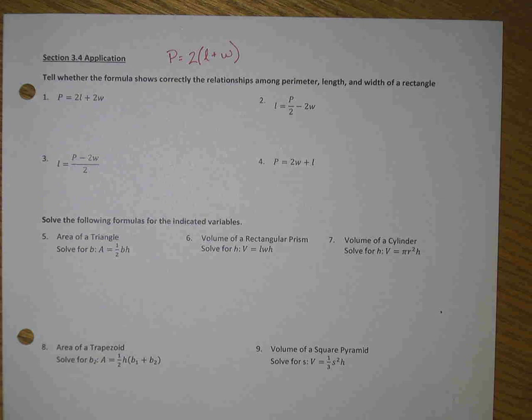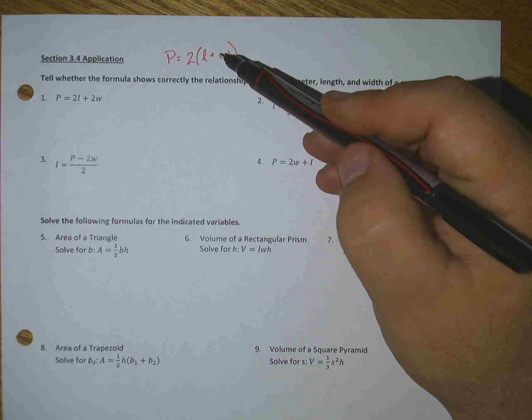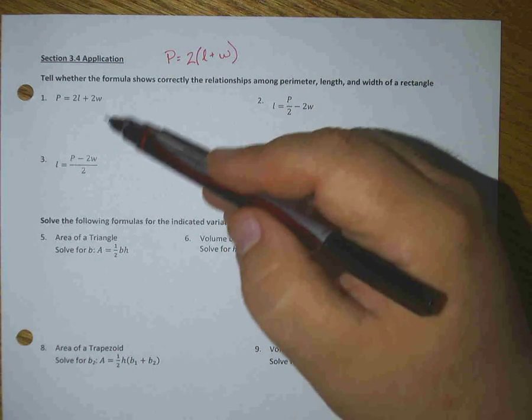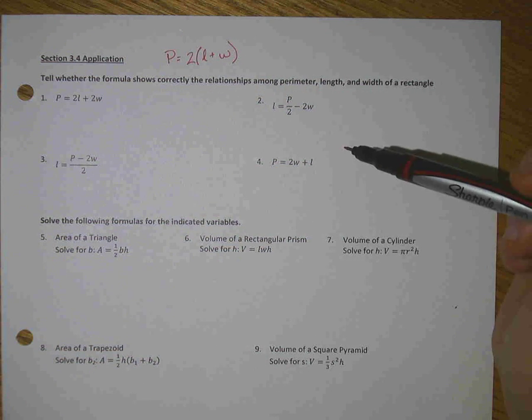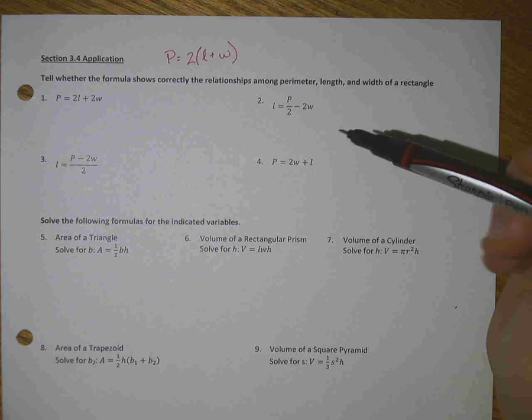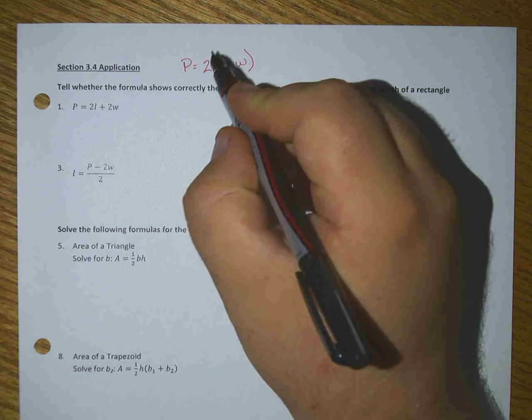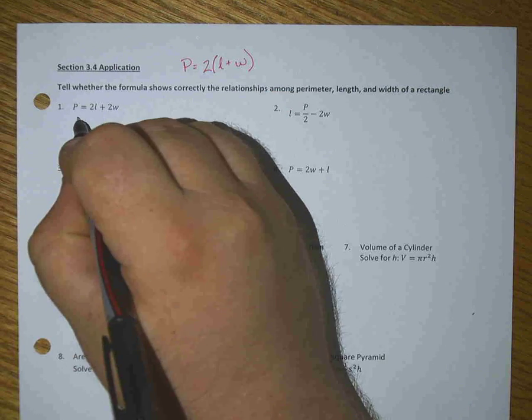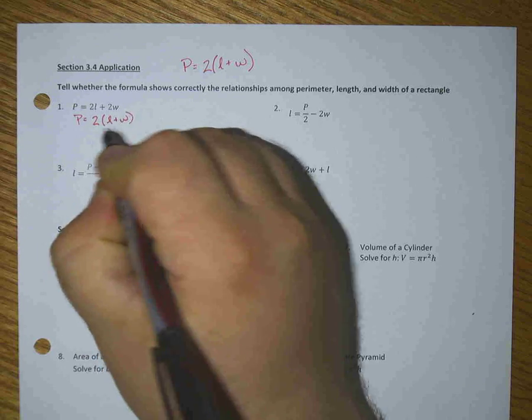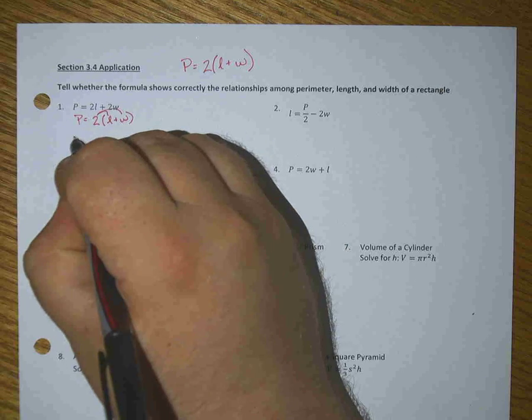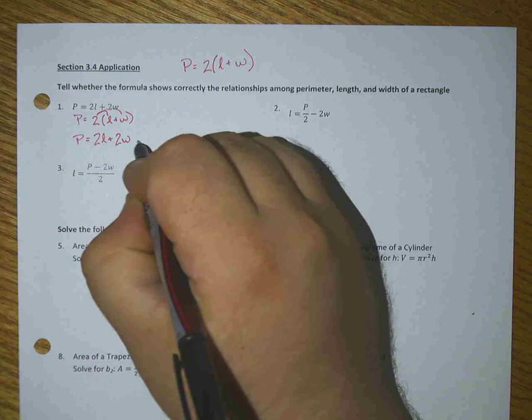With all these, you're going to look at whether there's a way to get from the basic formula to each equation given. So you're looking at a true or false scenario. Let's look at number one. Number one asks to solve for P. If I rewrite my equation and distribute the two, I get P = 2l + 2w, so that one is true.